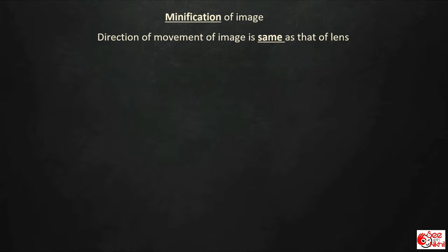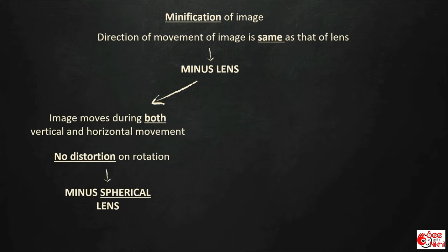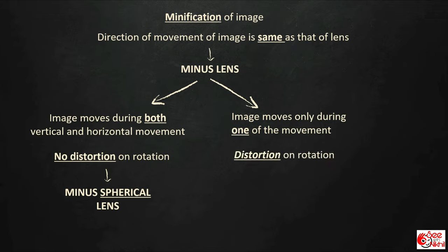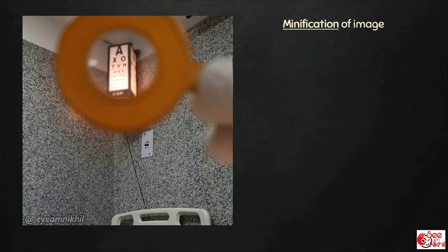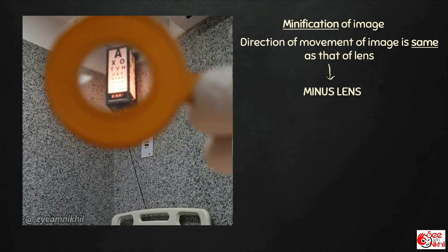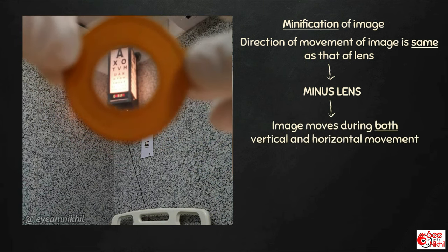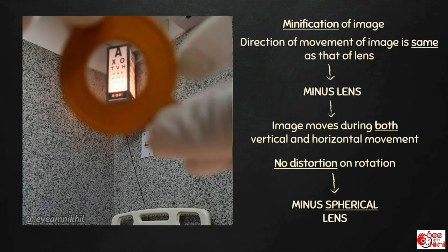If there is minification of image and the direction of movement of the image is the same as that of the lens, that means it is a minus lens. If the image moves during both vertical and horizontal movements and there is no distortion on rotation, that means it is a minus spherical lens. But if the image moves only during one of the movements and there is distortion on rotation, that means it is a minus cylindrical lens. In this video, there is slight minification, movement is in the same direction as the lens — it is a minus lens — and the image moves during both vertical and horizontal movements with no distortion on rotation, confirming it is a minus spherical lens.